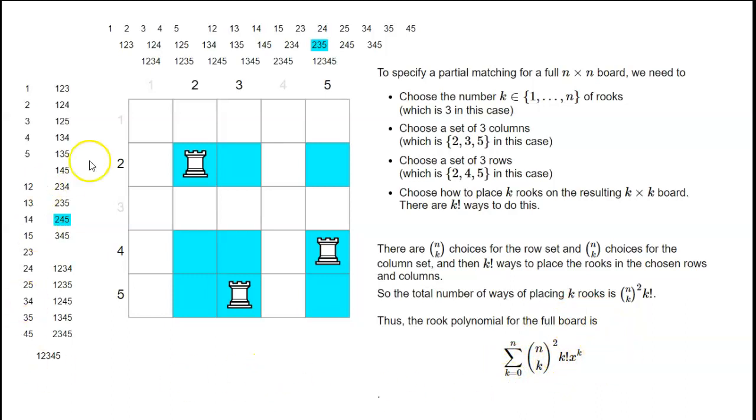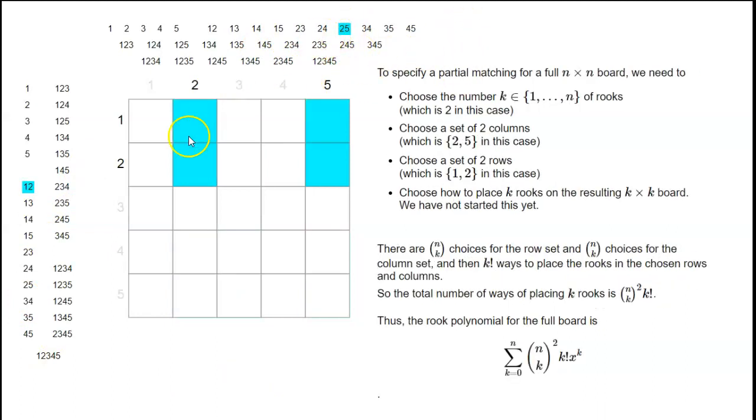Let's just do one more. If we want to place two rooks, we could decide to put them in columns two and five, and then maybe in rows one and four. Once we've chosen the columns and chosen the rows, that leaves us with a two by two board.